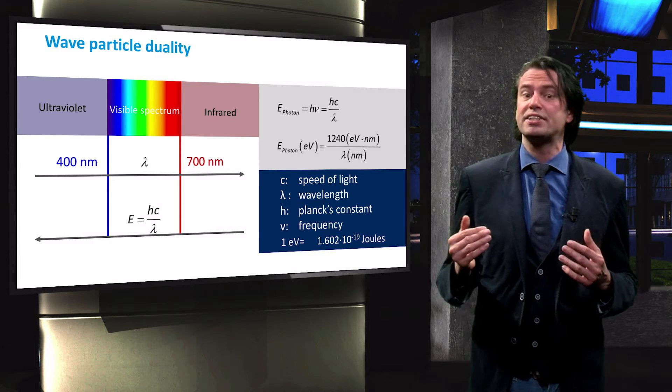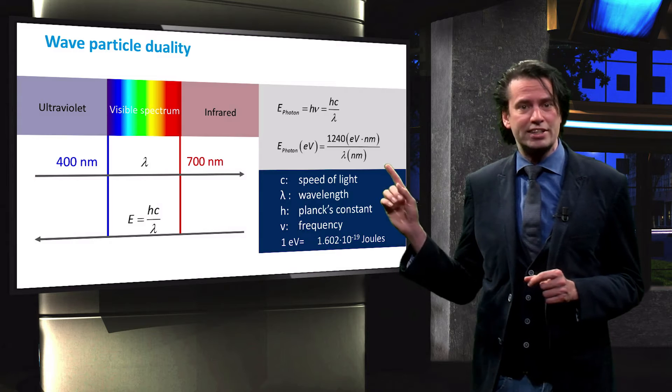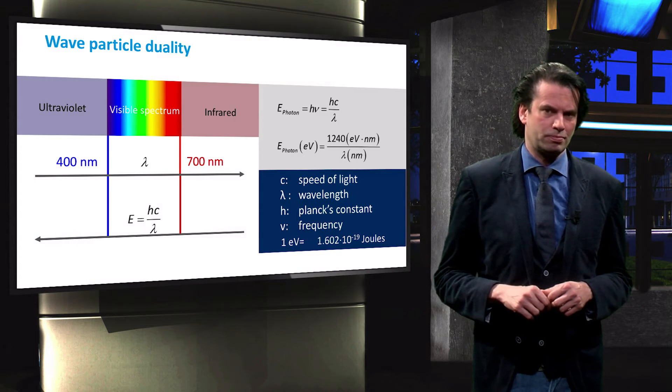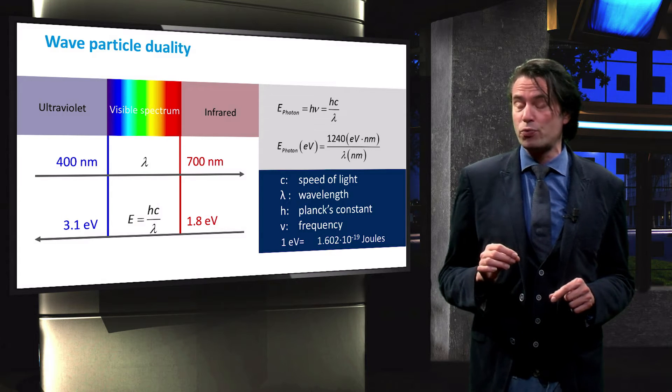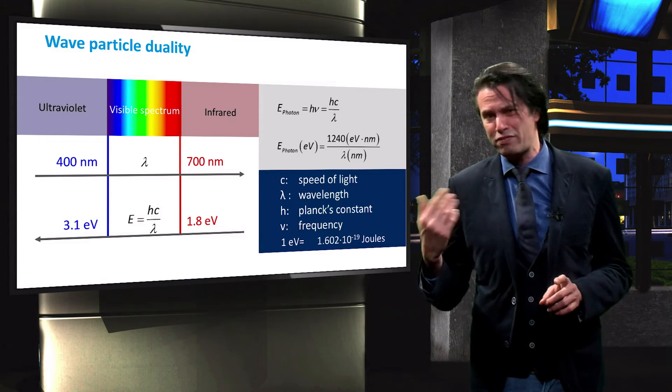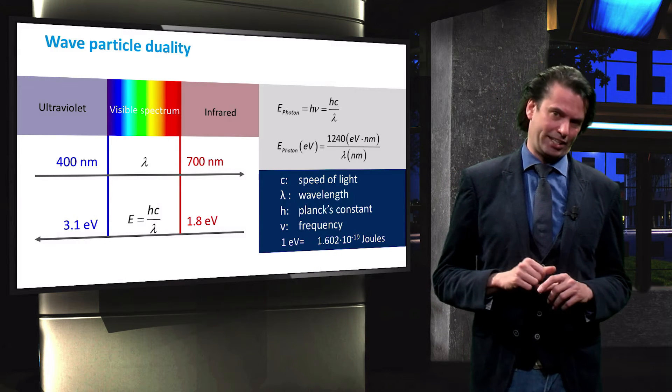We can find out how great the energy difference is by entering the photon wavelengths in the provided equation. We find that blue photons have an energy of 3.1 eV, while red photons have an energy of just 1.8 eV.